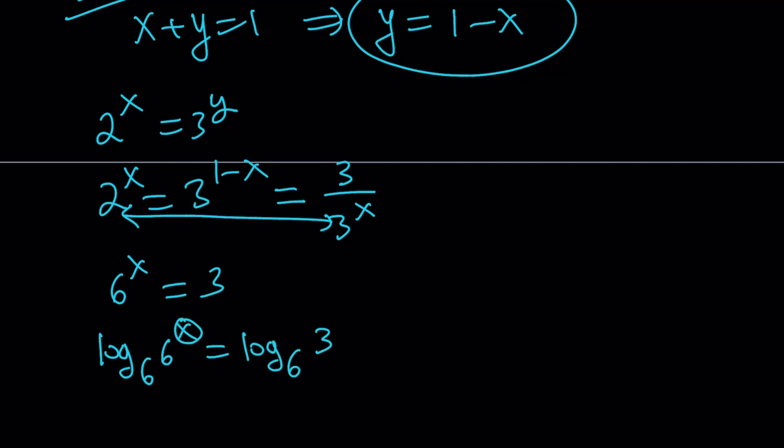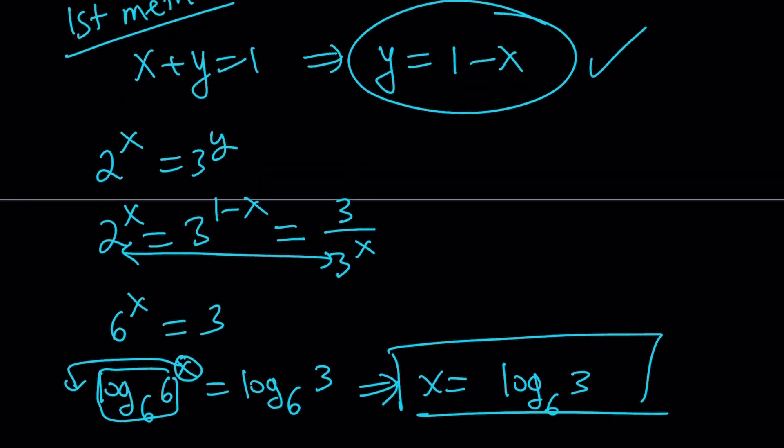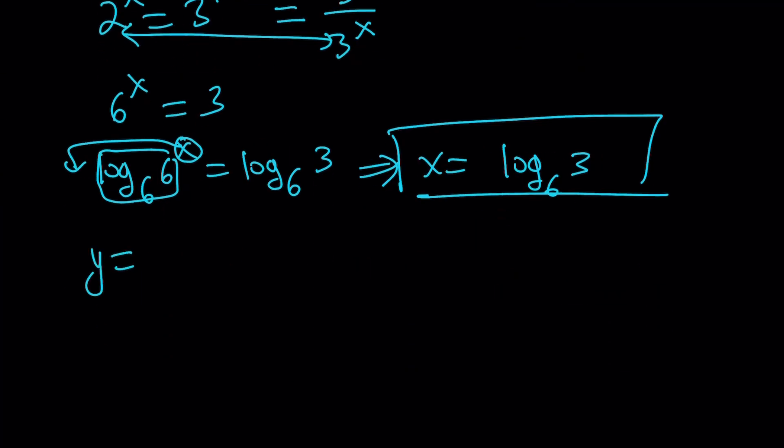And that's going to give us the answer. Because the x is going to move forward, this is going to be 1. And from here, we basically get x equals log 3 with base 6. There's only one x value. Now we've got to find the y value. Well, we know that y equals 1 minus x.